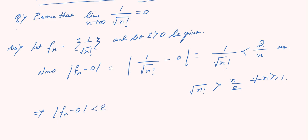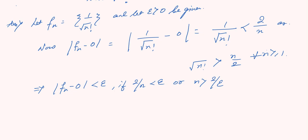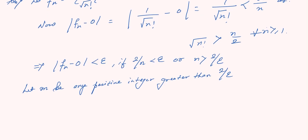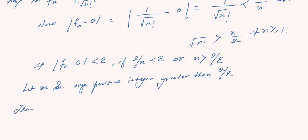This implies that |f(n) - 0| is less than epsilon if 2 by n is less than epsilon, or n is greater than 2 by epsilon. So let M be any positive integer greater than 2 by epsilon. We have now fixed our M.